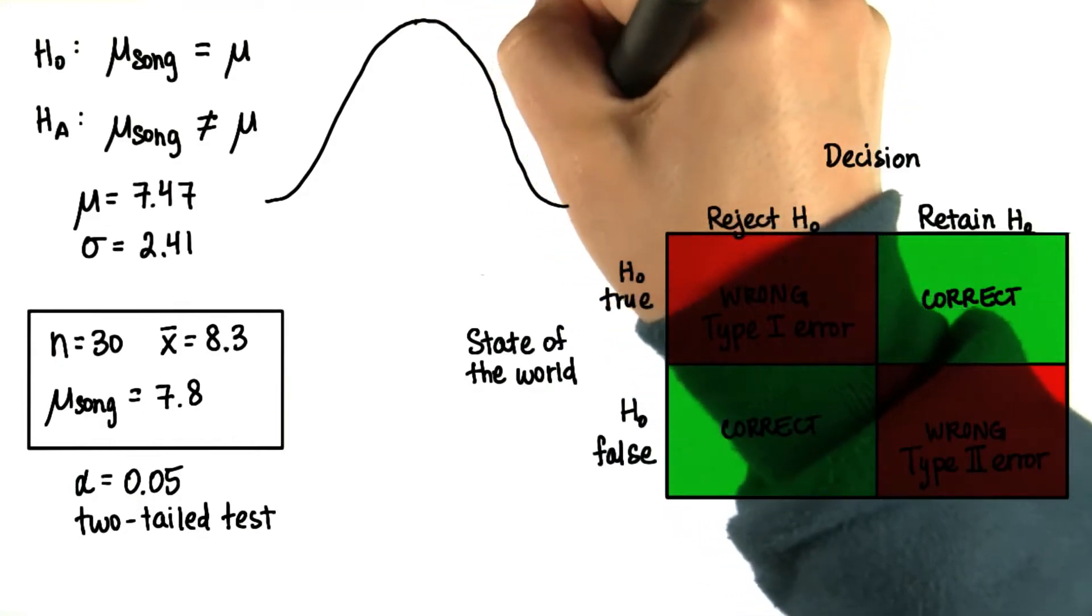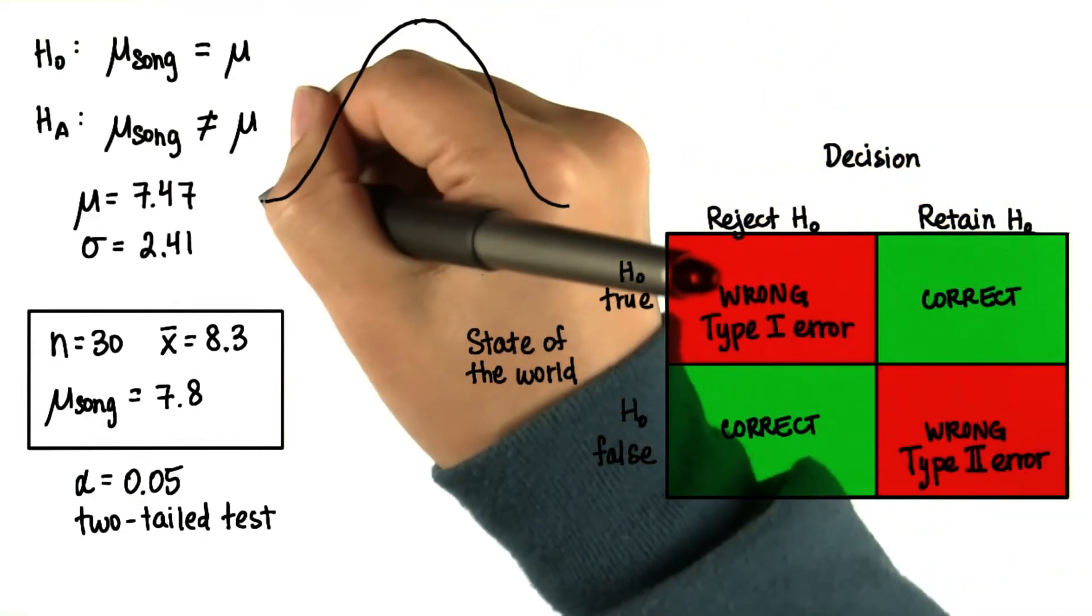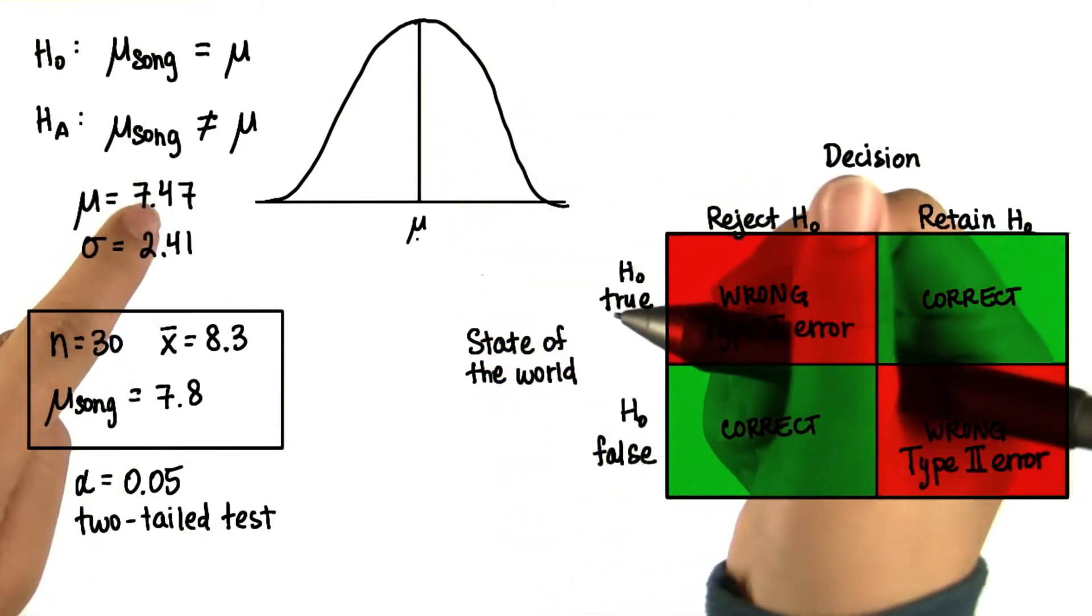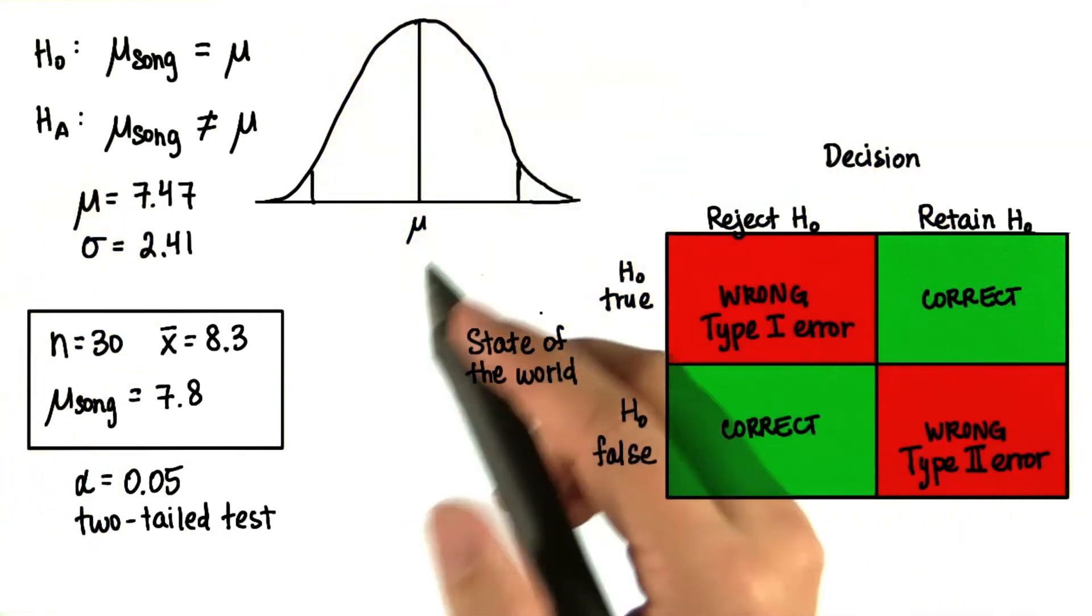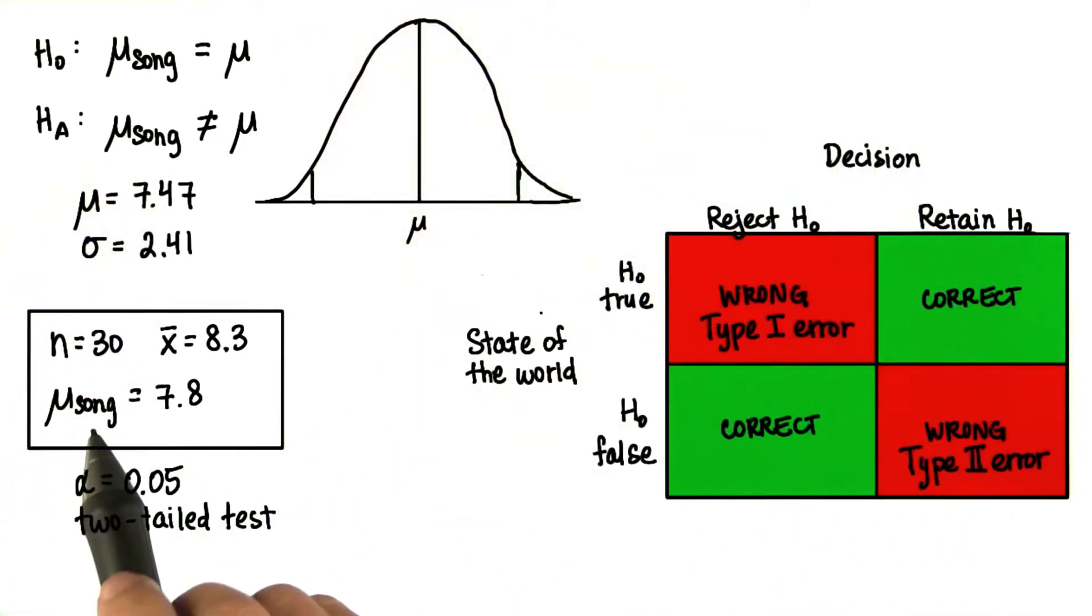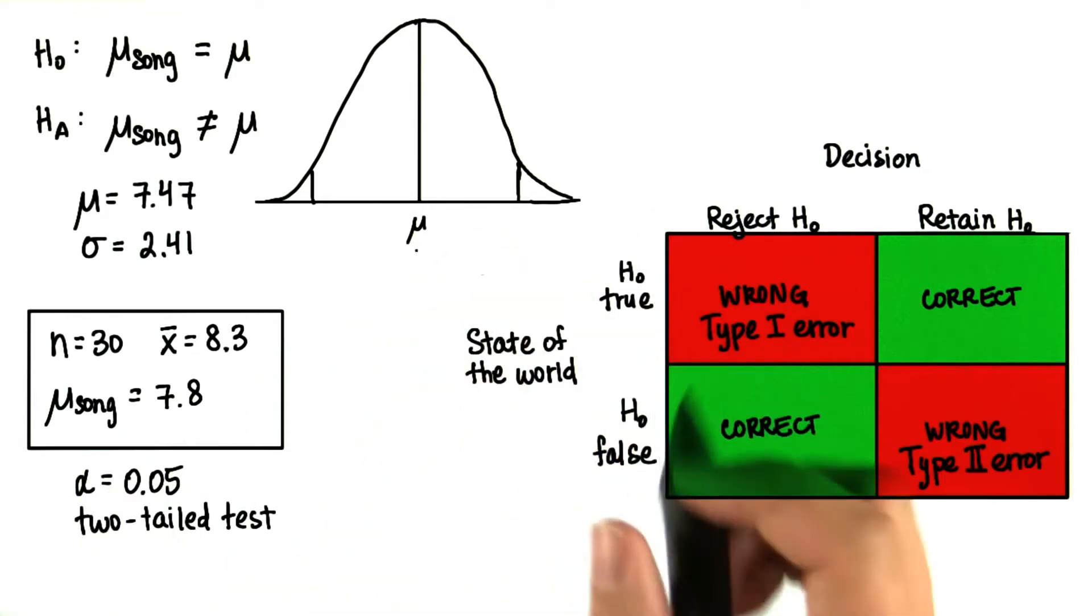Let's draw a diagram so that we can better visualize what's going on. Here's mu, which is 7.47, and we want to know if the new population parameter will be significantly different.